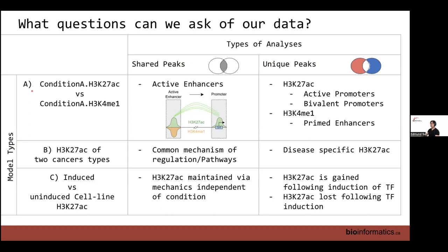Say your first set of files is H3K27 acetylation for condition A and your second set is K4 monomethylation for condition A. When we perform an overlap, what we essentially get is a set of regions enriched with both H3K27ac and K4me1. Recalling the study Martin highlighted, these marks often co-occur at distal regulatory elements called active enhancers, which go on to affect promoters and increase transcription.